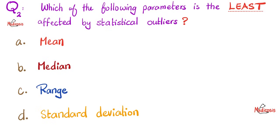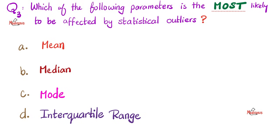Here's a question for you. Which of the following parameters is the least affected by statistical outliers? Is it A, mean, B, median, C, range, or D, standard deviation? Please let me know your answer in the comments. Here is another one. Which of the following parameters is the most likely to be affected by statistical outliers? Is it A, mean, B, median, C, mode, or D, interquartile range? Again, let me know your answer in the comments. You'll find the answer key in the next video, which will talk about statistical outliers, the weirdos.